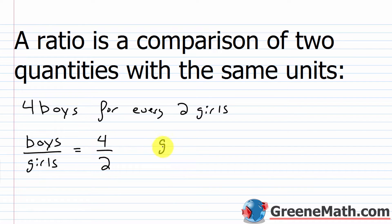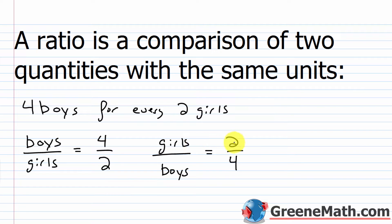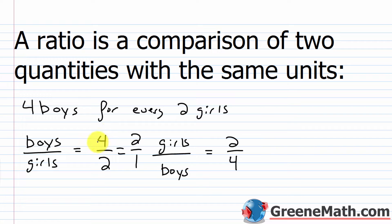If we flip this and say girls to boys, it would be two to four. Now, with a ratio you always want to simplify it just like we do with fractions. So four to two simplifies to two to one — divide four by two to get two, and divide two by two to get one.